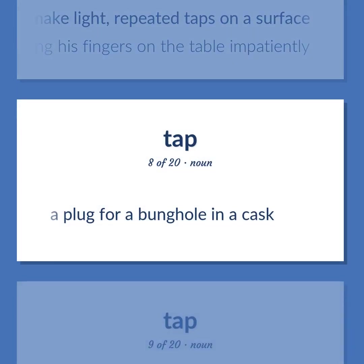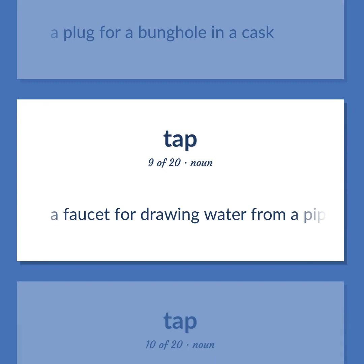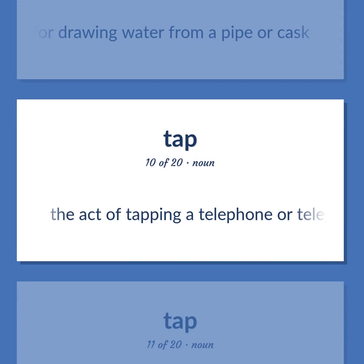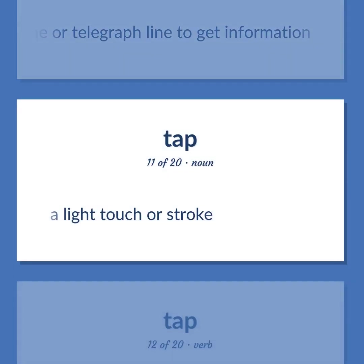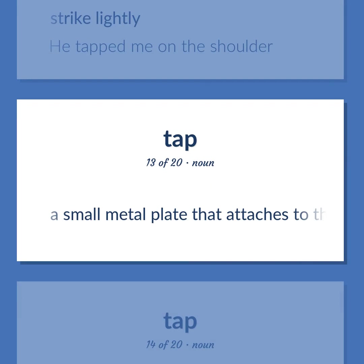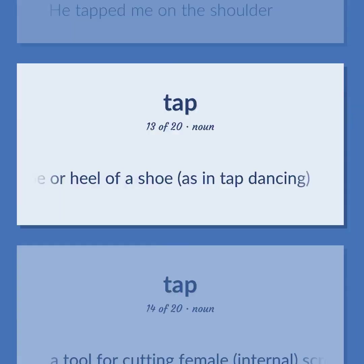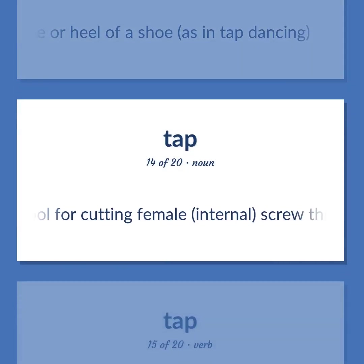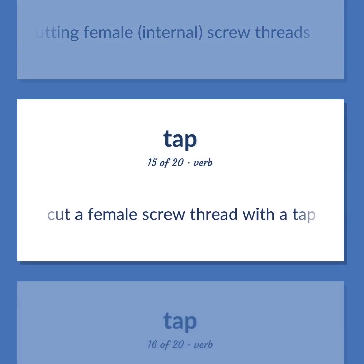A plug for a bunghole in a cask. A faucet for drawing water from a pipe or cask. The act of tapping a telephone or telegraph line to get information. A light touch or stroke — strike lightly — he tapped me on the shoulder. A small metal plate that attaches to the toe or heel of a shoe, as in tap dancing. A tool for cutting female, internal screw threads. Cut a female screw thread with a tap.